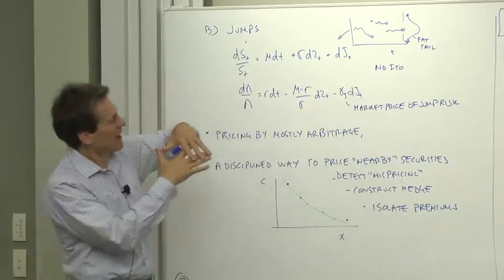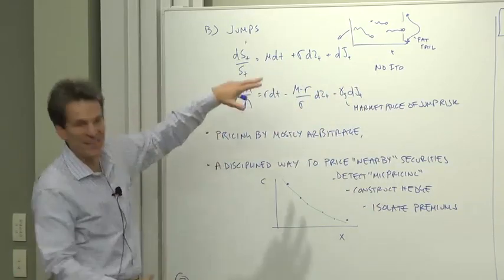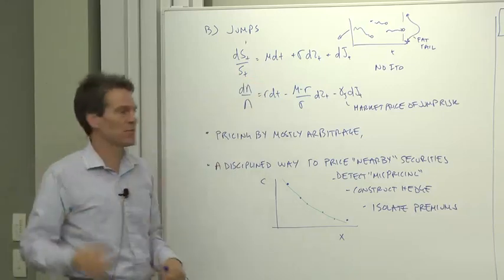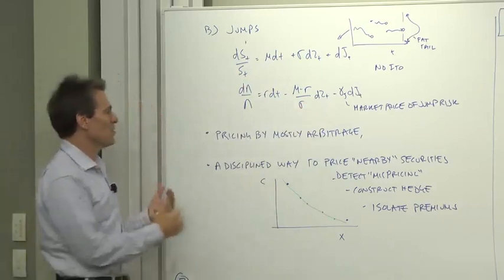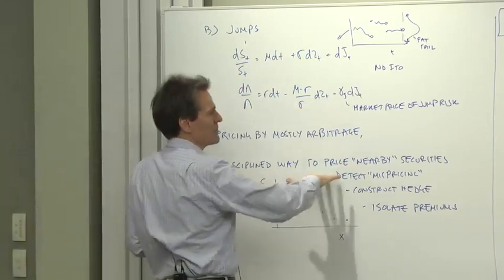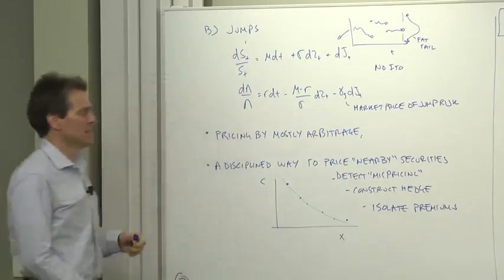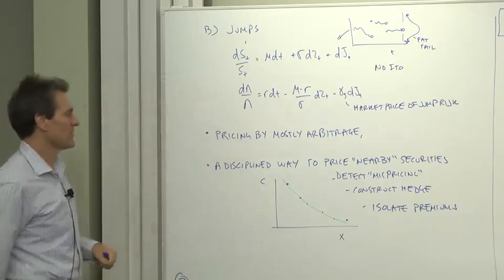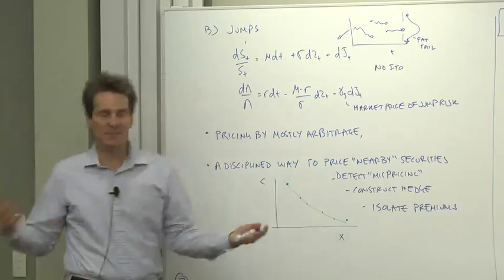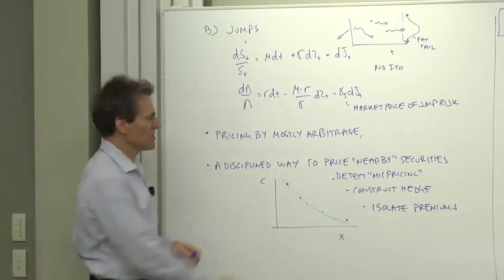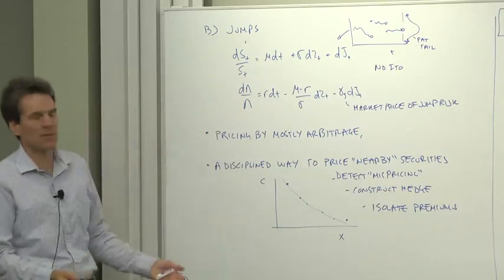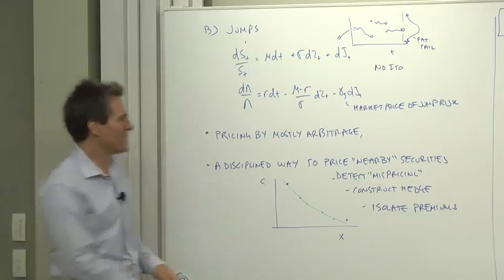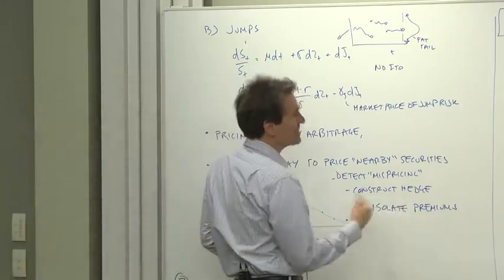But then you can fit 15 different options from only two or three. You can figure out what all those parameters are. You will have a disciplined way to price nearby securities, to price one thing in terms of many others. Possibly to detect mispricings. That's what people use it for. To construct hedges. If you have to create one security, how do you hedge it with a bunch of others? And in a portfolio sense, to isolate the premiums.